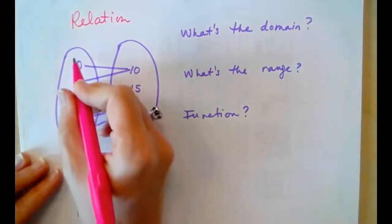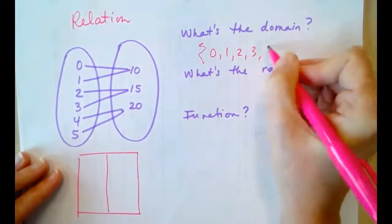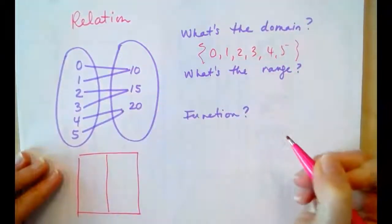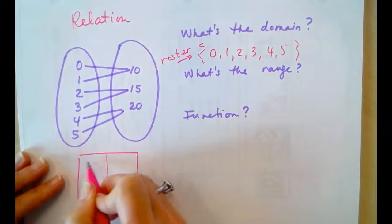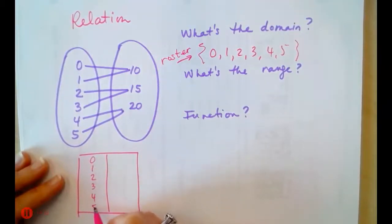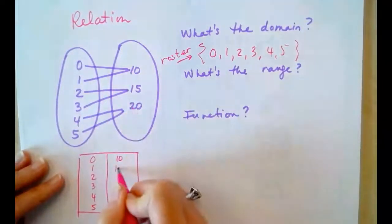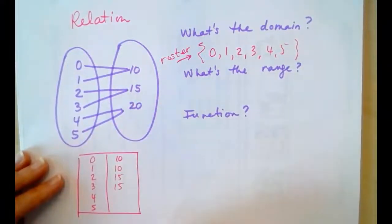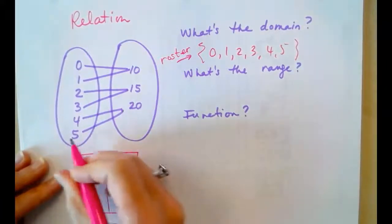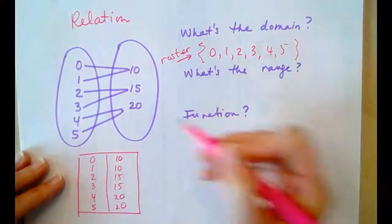So, our domain is 0, 1, 2, 3, 4, and 5. This is discrete, so that's why I'm using a roster notation. So, 0, 1, 2, 3, 4, and 5. And 0 maps to 10. 1 also maps to 10. 2 maps to 15. 3 also maps to 15. 4 maps to 20. 5 maps to 20. So, these are the ordered pairs that this relation represents.